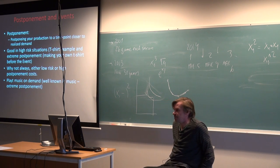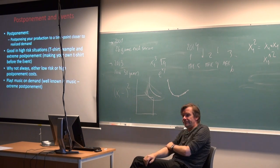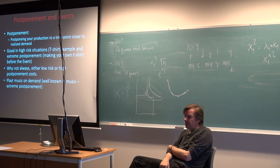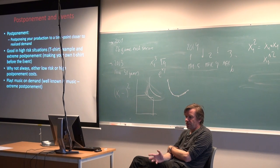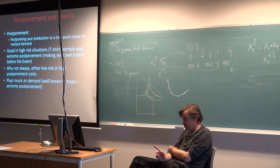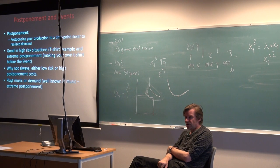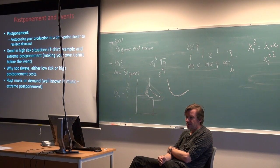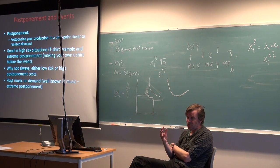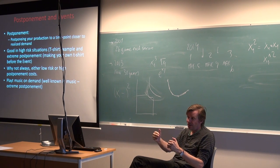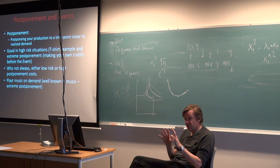Now let's say a little bit more about postponement. Postponement means postponing your production to a time point closer to realized demand. So postponement is about trying to wait - instead of producing something now, you try to wait to produce it later. The reason should be evident: if there is high uncertainty on demand, the longer you wait until you produce, the better from a producer's point of view.